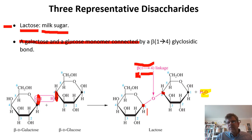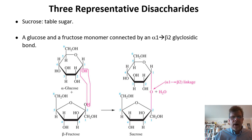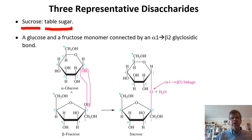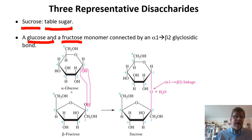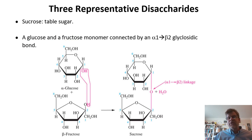Our third representative disaccharide looks vastly different than the other two and will be easy to pick out from a lineup. It is called sucrose — table sugar. If you had coffee with sugar this morning, you ingested some sucrose. In this case, the disaccharide is a glucose monomer and a fructose monomer — two of our five representative monosaccharides with a nutritional role. Fructose was fruit sugar; glucose was a major energy source in animal systems. We put those together in a disaccharide through a glycosidic linkage.